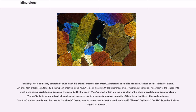Tenacity refers to the way a mineral behaves when it is broken, crushed, bent, or torn. A mineral can be brittle, malleable, sectile, ductile, flexible, or elastic. An important influence on tenacity is the type of chemical bond, for example ionic or metallic. Of the other measures of mechanical cohesion, cleavage is the tendency to break along certain crystallographic planes. It is described by the quality, for example perfect or fair, and the orientation of the plane in crystallographic nomenclature. Parting is the tendency to break along planes of weakness due to pressure, twinning, or exsolution.